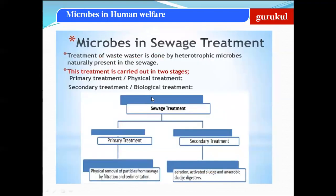That was about household and industrial production. Now coming to microbes and sewage treatment. Sewage disposal is one of the most important water pollutants especially in urban cities. Sewage waste is disposed by residential areas, schools, colleges, and institutions. This sewage water must be treated before being discharged into water bodies, and microbes are used for this treatment.